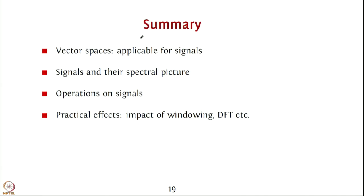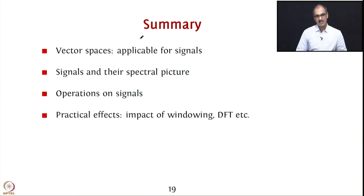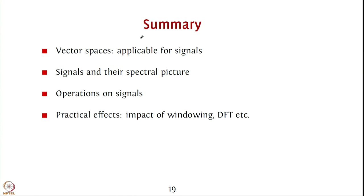To summarize the past few things that we have seen. Vector spaces are as applicable for signals as they are for vectors. We have also seen signals and their spectral picture using the Fourier transform and how the Fourier transform can be used to interpret the frequency characteristics of signals. We looked at some common operations of signals such as convolution, multiplication, their norm, energy and things of that sort. And finally, we have seen both theoretically and practically impacts of windowing, the use of the discrete Fourier transform for representing signals and other such features. Thank you.